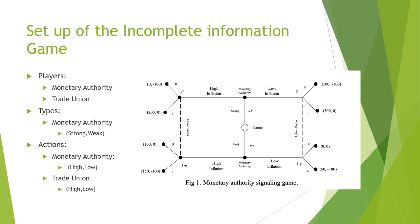The setup of the game: we have two players, the monetary authority and the trade union. Nature selects what type the monetary authority is — strong or weak. Based on that, the monetary authority either chooses to announce high inflation or low inflation. Using Bayes' rule, the trade union will update their beliefs based on the announcement to then select optimally whether to push for high wages or low wages.